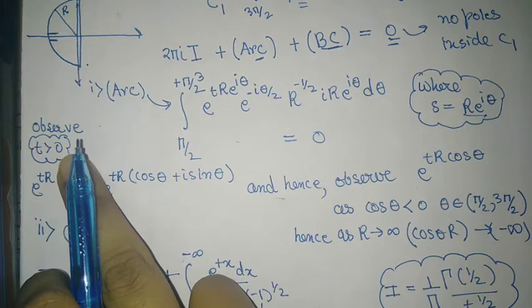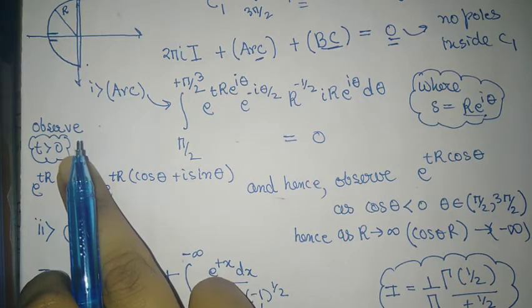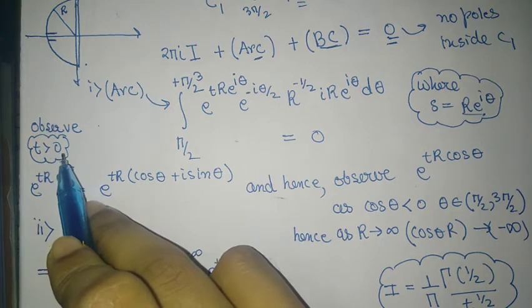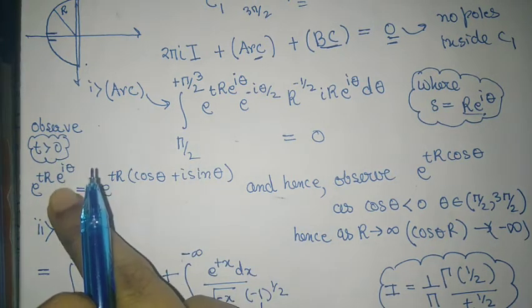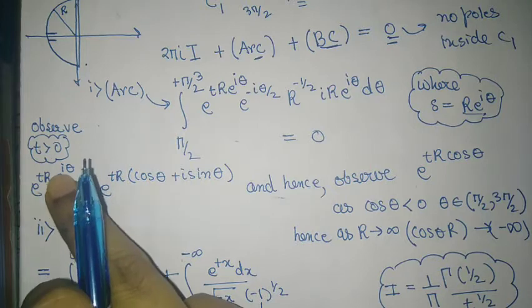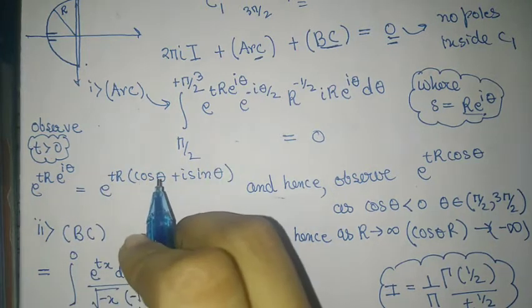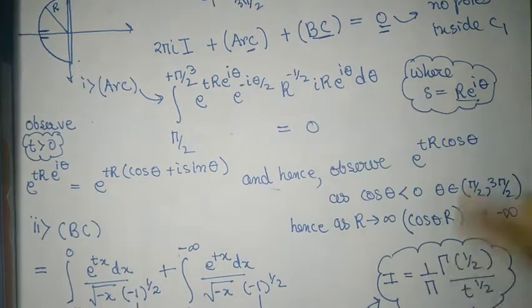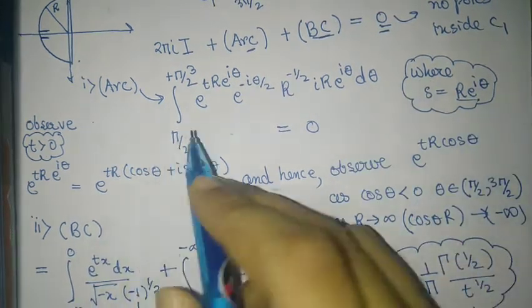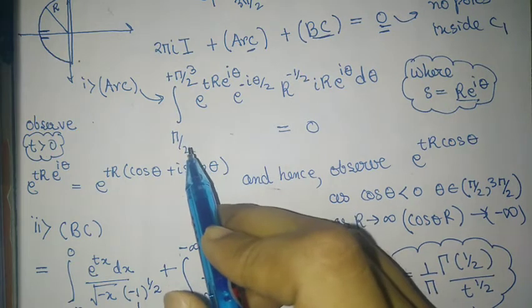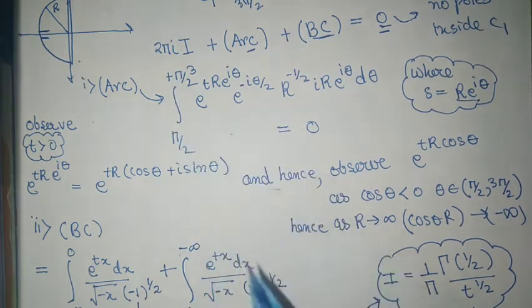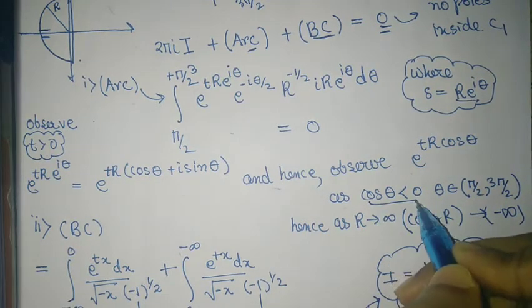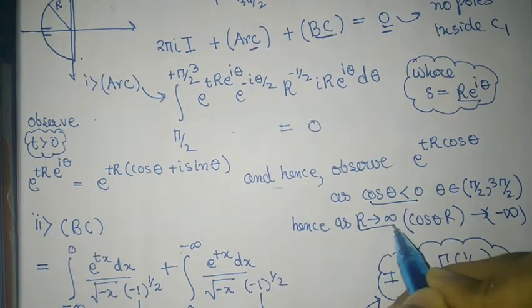e power i theta can be written as, so observe that t is greater than zero because Laplace transform is defined for t greater than zero. And for that t greater than zero, observe that e power i theta can be written as cos theta plus i sin theta. And e power t r cos theta because theta lies between pi by 2 and 3 pi by 2 cos theta is negative.